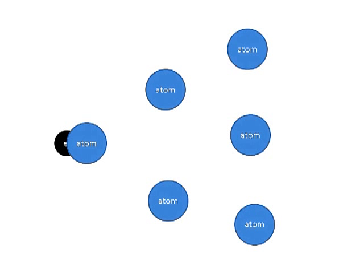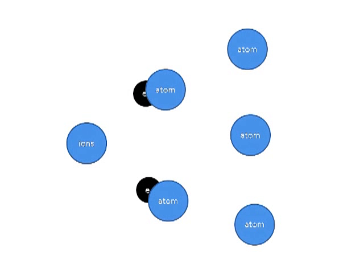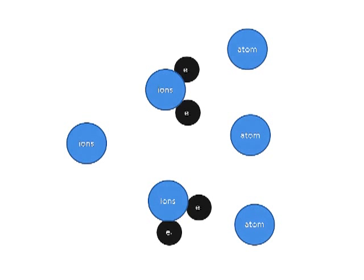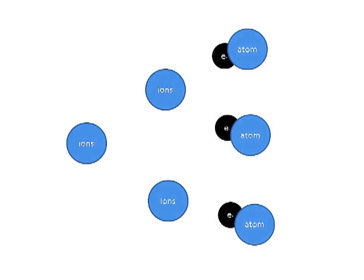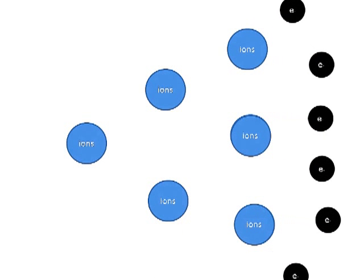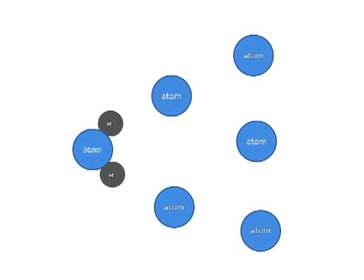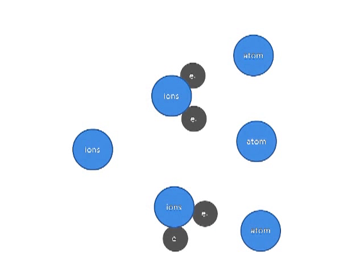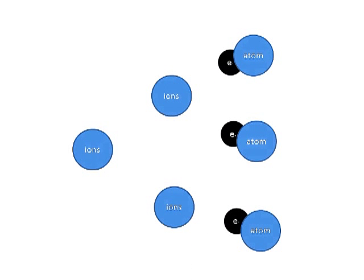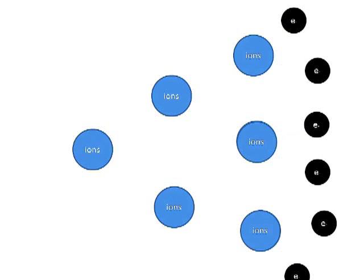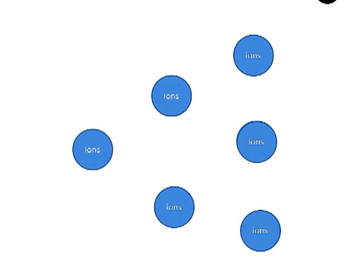Electron avalanche is a mechanism which initiates the ionization process. It is a process where a single electron collides with a neutral atom and produces another electron and a positive ion. The two electrons from this collision will continue colliding into other neutral atoms, producing another two electrons for each electron. This process happens very rapidly, hence the name electron avalanche.